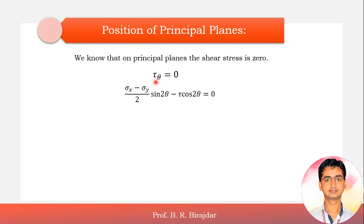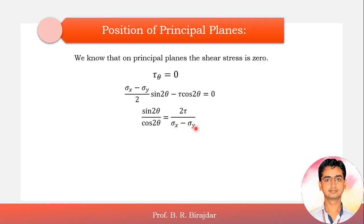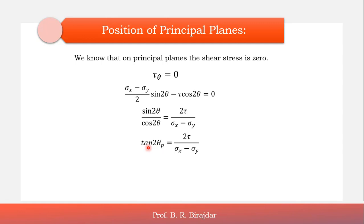If shear stress is present, then that is not a principal plane. So tau theta must equal zero. Rearranging: sigma x minus sigma y over 2 times sine 2θ equals tau cos 2θ. Taking sine 2θ divided by cos 2θ to the left gives tan 2θ. So tan 2θp equals 2τ divided by (σx − σy). This p indicates principal plane position. This is equation number 3.